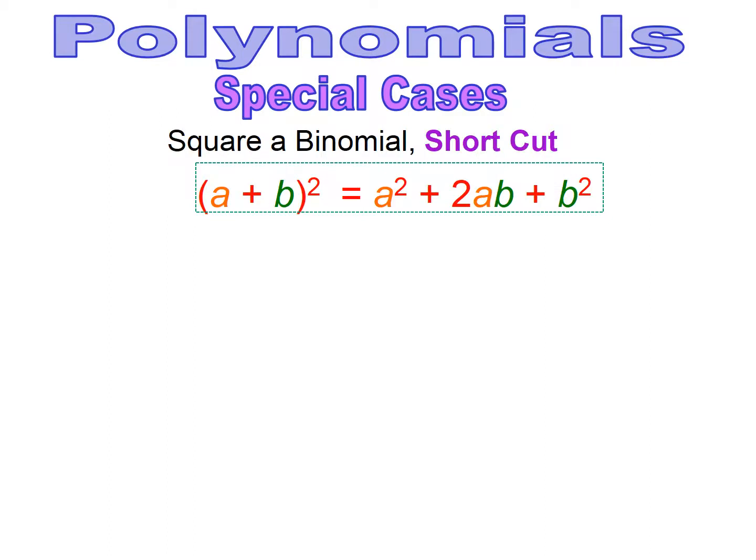Now with squared binomials, there are shortcuts for multiplying them. If you have a binomial squared, you can take the first term and square it. The middle term is always going to be the two terms inside the binomial multiplied together and then doubled — so it's 2 times a times b. And then the last term will always be the last term in the binomial squared.